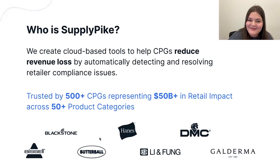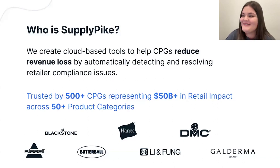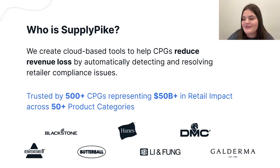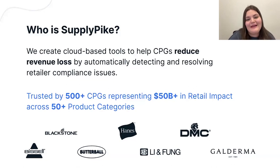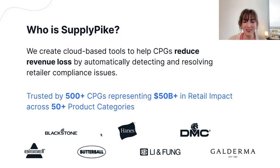If you are new to our webinars or have never heard of Supply Pike, we are a Northwest Arkansas-based software company that helps suppliers reduce revenue loss by detecting compliance issues through business logic and automation. We work with multiple retailers like Walmart, Target, Amazon, and Kroger. We work with a lot of great suppliers across almost every product category, and we would love to help reduce revenue loss and win back money owed for you.